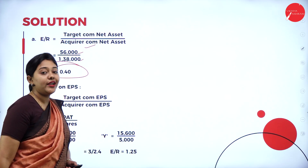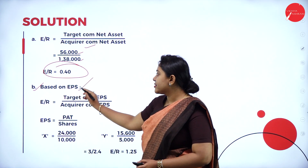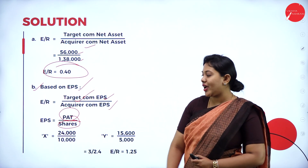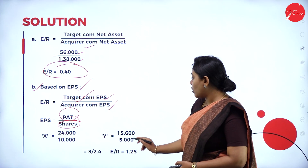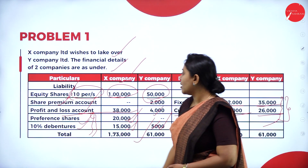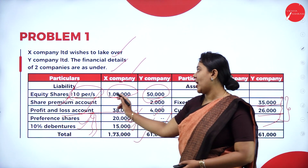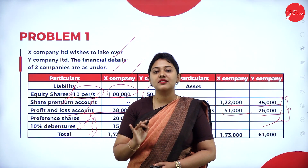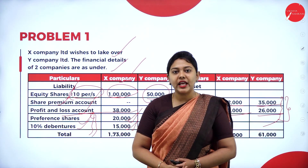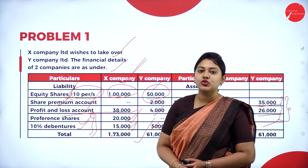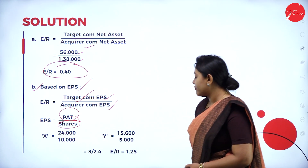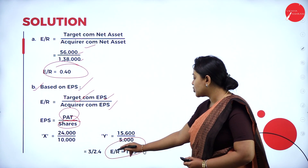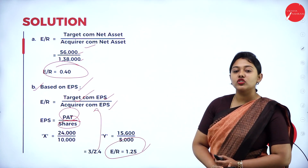Next, we calculate exchange ratio based on EPS — earnings per share. The formula is: target company EPS divided by acquirer company EPS, where EPS equals profit after tax divided by number of shares. Profit after tax is 24,000 and 15,600. For number of shares: equity share of rupees 10, so 1 lakh divided by 10 gives 10,000 shares for X company and 5,000 shares for Y company. The EPS values give 3 and 2.4. The exchange ratio is 1.25.